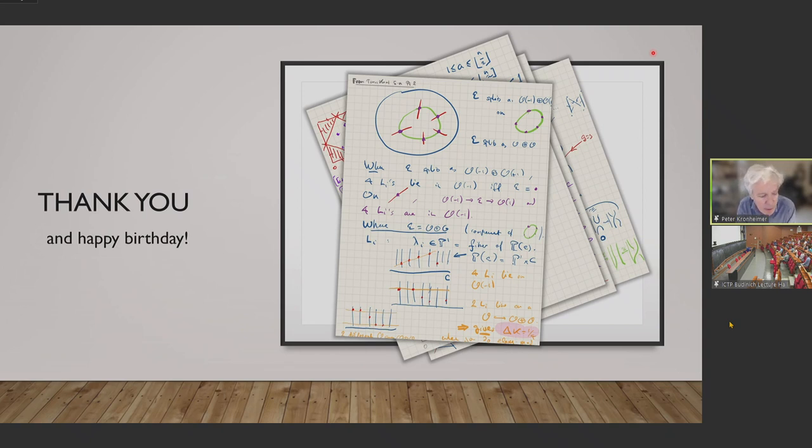Whichever way you look at it, perhaps a more fundamental viewpoint is in the work of Adi Daemi and Chris Scaduto. So you could think of these calculations as relevant to a calculation of what they might call the equivariant version of singular instanton homology for knots in S3 for example, such as the torus knots.